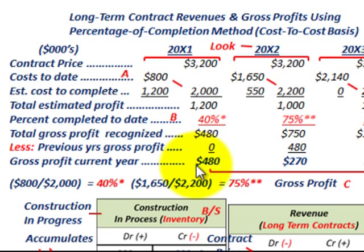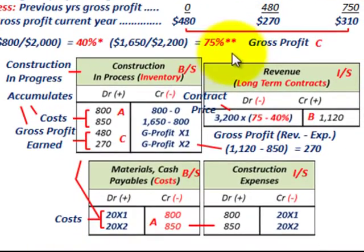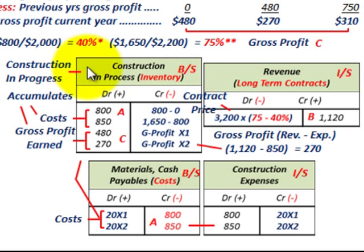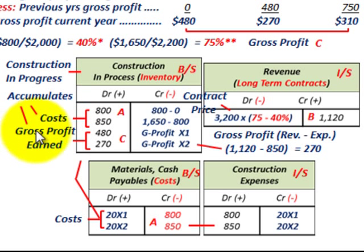Now we've calculated our gross profits for both year 20x1 and 20x2. Let's look at how we record this. We have to set up a special account called Construction in Progress — it's an inventory account on the balance sheet. This account accumulates the costs on the contract and also the gross profit earned on the contract.